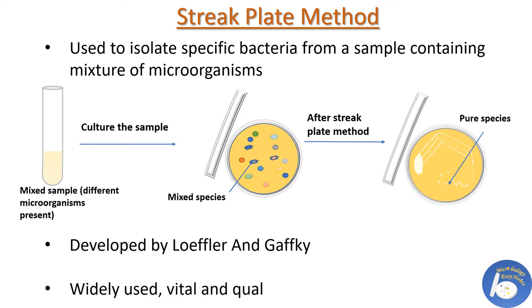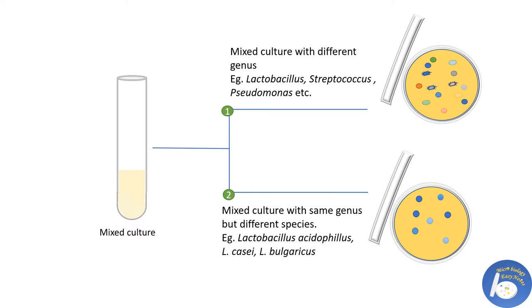It is a widely used vital and qualitative isolation method. The streak plate method is used to isolate a specific single microorganism from a mixed culture. There can be two possibilities. A mixed culture may contain different species — for example, Lactobacillus, Streptococcus, and Pseudomonas may be present in a single sample — and we can separate out one single genus from the sample using this method.